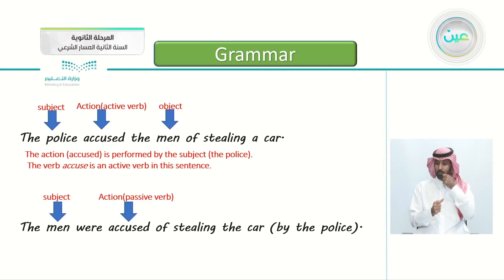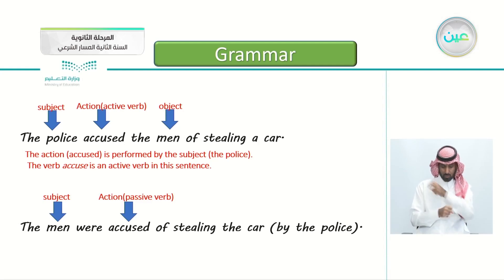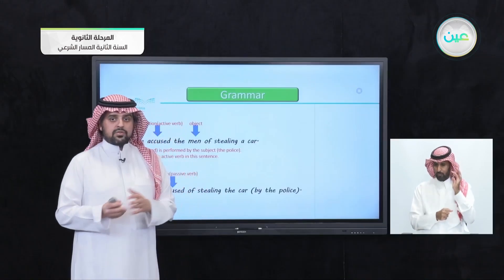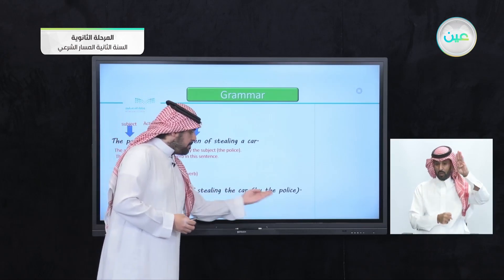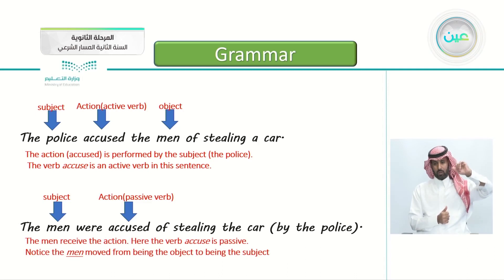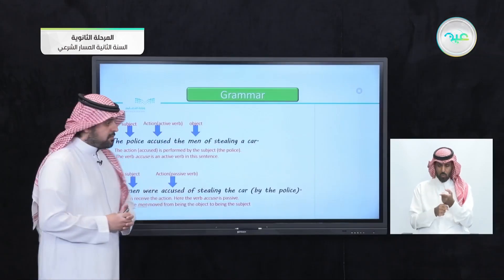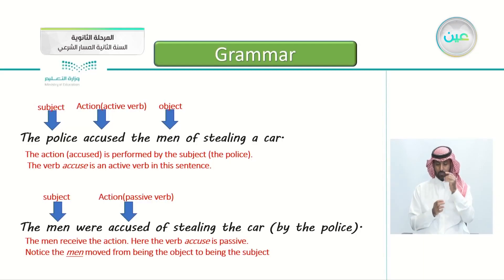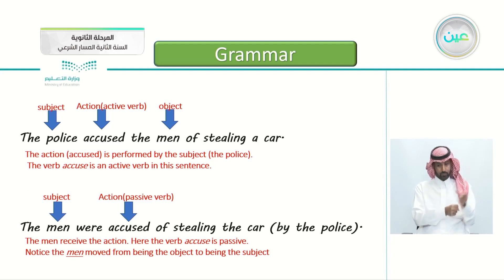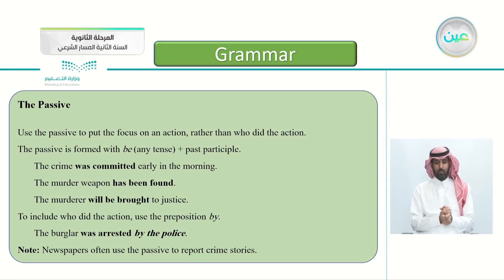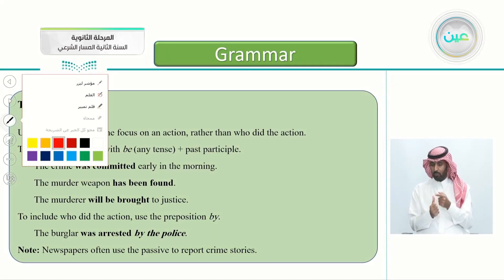'The men were accused' — this is a passive verb — 'of stealing the car.' If you want to add the doer here, you say 'by the police.' The men received the action, so the verb 'accused' is passive. Notice: the men moved from being the object to being the subject, acting as a subject. This is the passive.